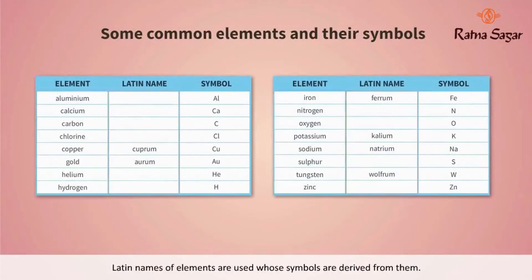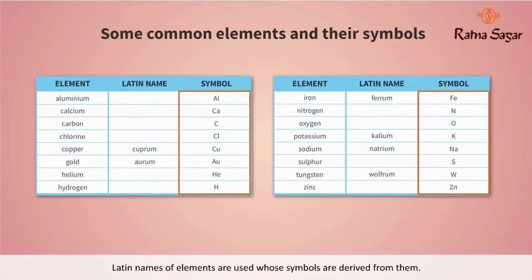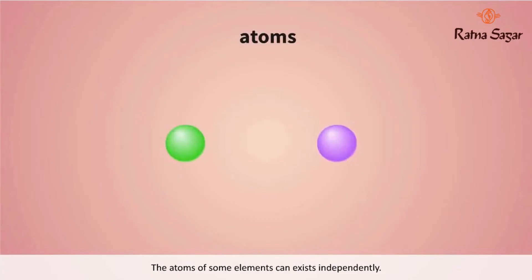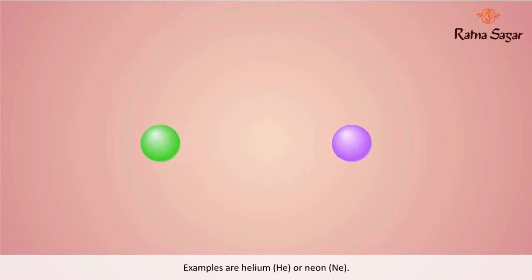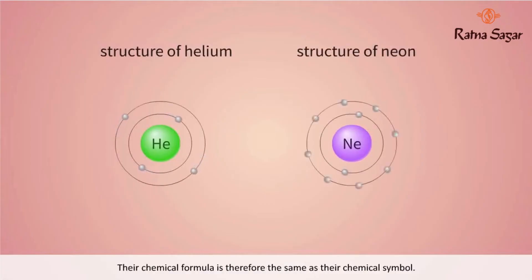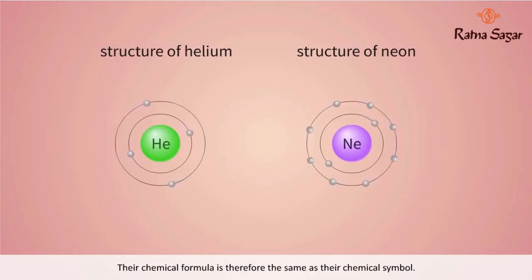Latin names of elements are used, and symbols are derived from them. The atoms of some elements can exist independently — examples are helium (He) and neon (Ne). They are known as monoatomic elements. Their chemical formula is therefore the same as their chemical symbol.